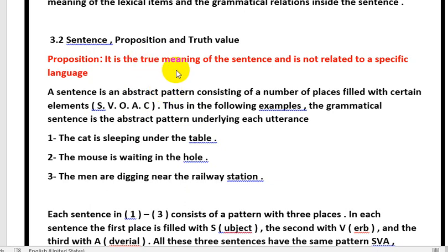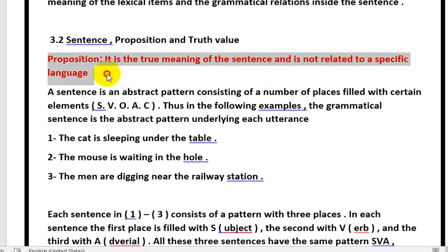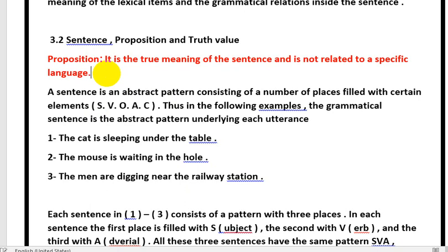It is the true meaning or the real meaning of the sentence, and it is not related to a specific language. The proposition is the meaning of a sentence regardless of which language it's expressed in. For example: 'The cat is sleeping under the table' — القطة نائمة تحت الطاولة — whether in English, Arabic, Spanish, or any language, the meaning is the same. It is the true meaning of the sentence and is not tied to any specific language.